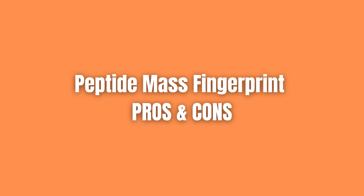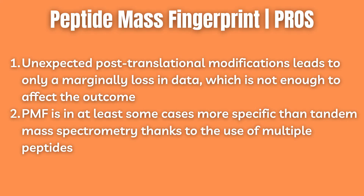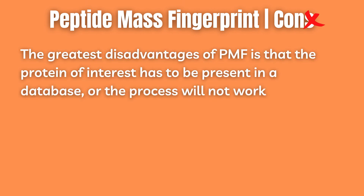There are two main advantages of peptide mass fingerprinting. First, unexpected post-translational modifications lead to only a marginal loss in data, which is usually not enough to affect the outcome. Second, PMF is in at least some cases more specific than the tandem mass spectrometry approach, thanks to the use of multiple peptides. The greatest disadvantage of PMF is that the protein of interest has to be present in a database. If it is not present in a database, then the process won't work, since we have nothing to compare our real peptide values to.